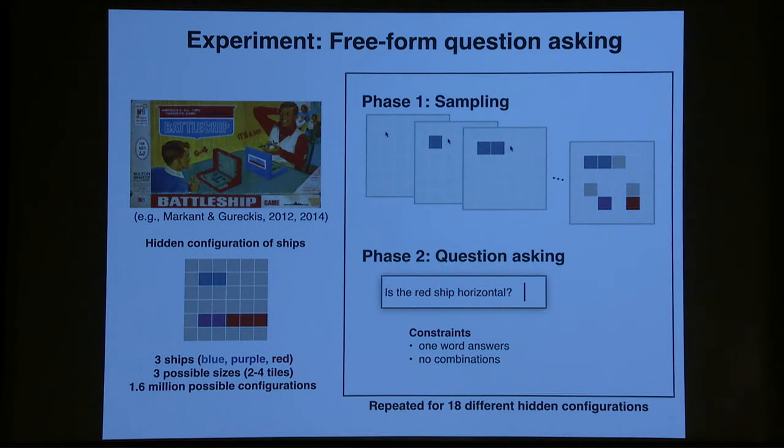And there were very few constraints, one of which was the question had to be answerable with a single word or number. You couldn't ask, tell me where all the ships are, right? That otherwise would be a valid question. So it has to be a question that you can answer with a single piece of information, and try not to stack multiple questions together were the only constraints.